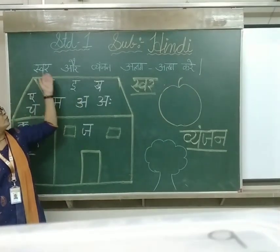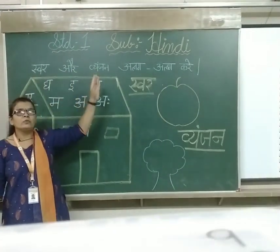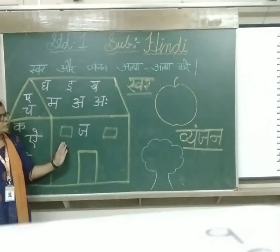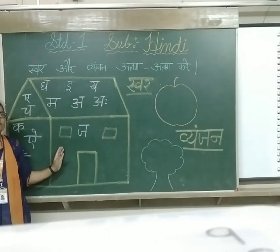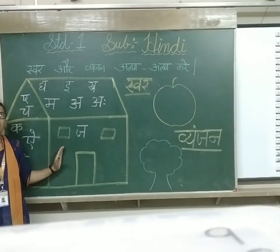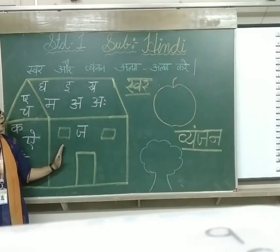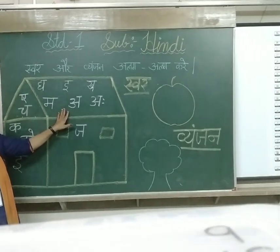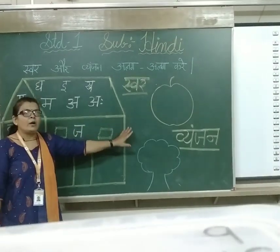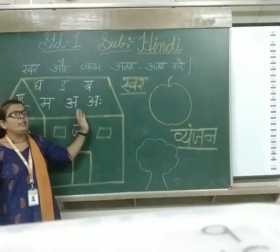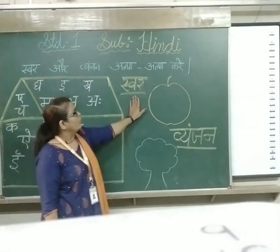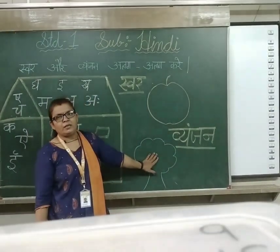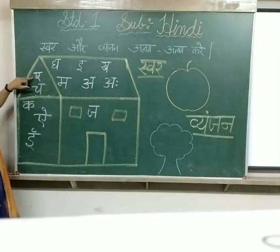Is activity mein aapko Swar and Vyanjan ko alag-alag karna hai. Look at the picture. Which picture is this? House. House ko kya bolte hain Hindi mein? In this house I have written Swar and Vyanjan. Swar aur Vyanjan ko aapko alag-alag — it means classification karke Swar ko save pe likhna hai, and Vyanjan ko vriksh mein likhna hai.